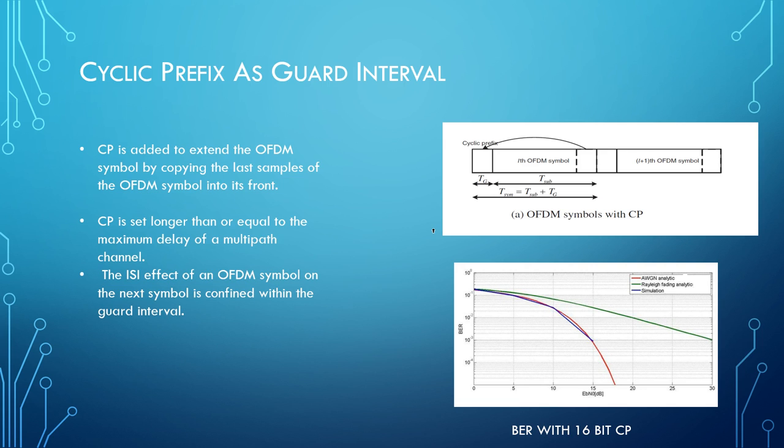Now, showing cyclic prefix as guard interval. As we can see from the diagram on the top, the cyclic prefix is a part of the OFDM symbol cut and joined at the front of the OFDM symbol. That is being demarcated by the symbol TG, and the total symbol time is T sub plus the addition of TG. CP is a bit to extend the OFDM symbol by copying the last samples of the OFDM symbol into its front.